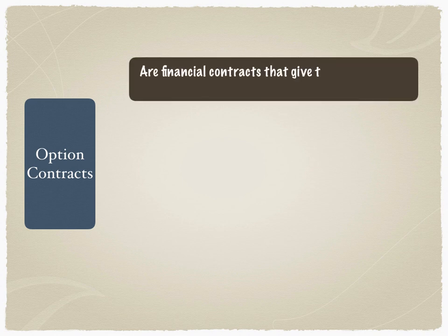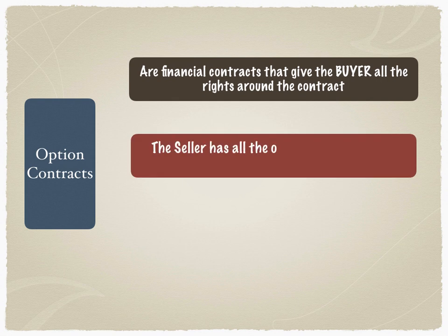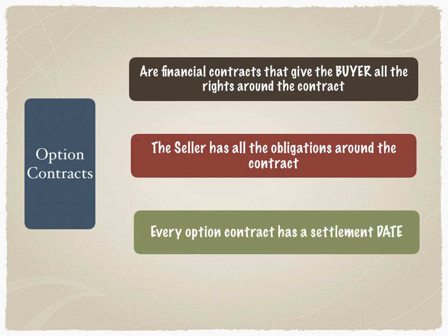Option contracts are financial contracts that give the buyer all the rights around the contract. Options are financial instruments — they are contracts that are issued by the exchange. Option contracts give the buyer all the rights under the contract, while the seller has all the obligations. Every option contract must have a settlement date, also called as expiry date.